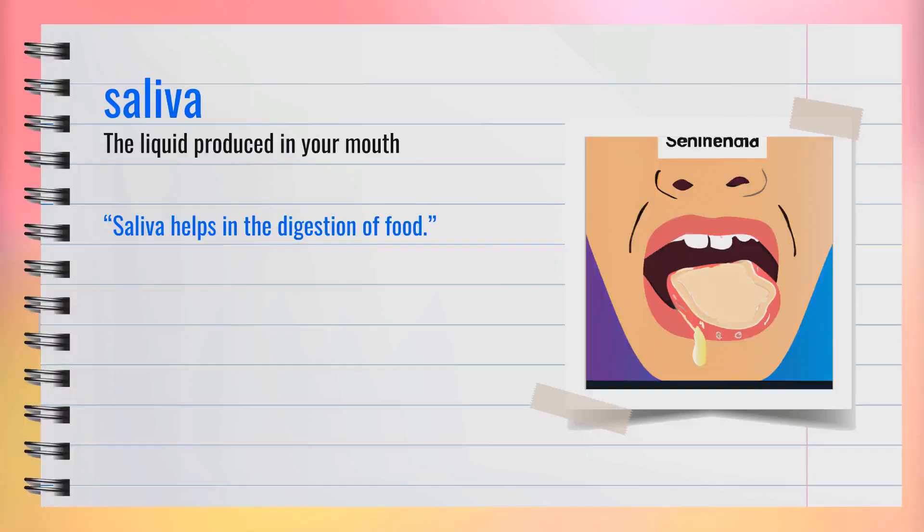The word saliva, spelled S-A-L-I-V-A, is a noun. It means the liquid produced in your mouth. For example, saliva helps in the digestion of food. In short, saliva is the fluid that aids in chewing and digestion.